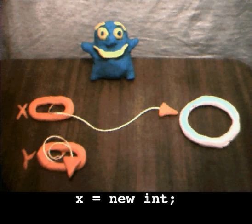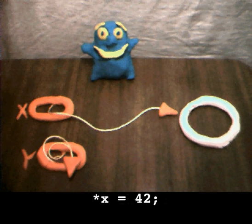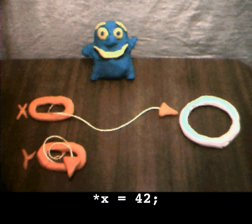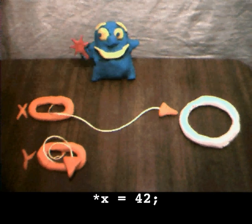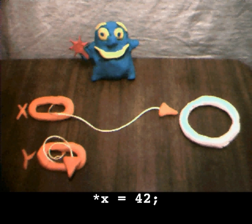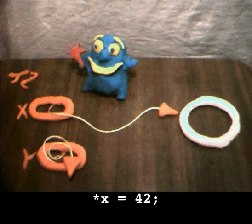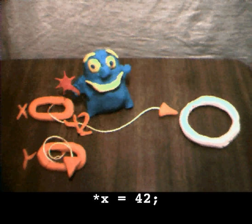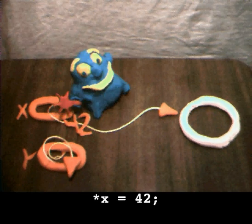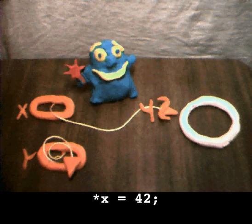Okay, I'll dereference the pointer x to store the number 42 into its pointee. For this trick, I'll need my magic wand of dereferencing. Your magic wand of dereferencing? That's great. This is what the code looks like. I'll just set up the number and... Hey, look. There it goes.